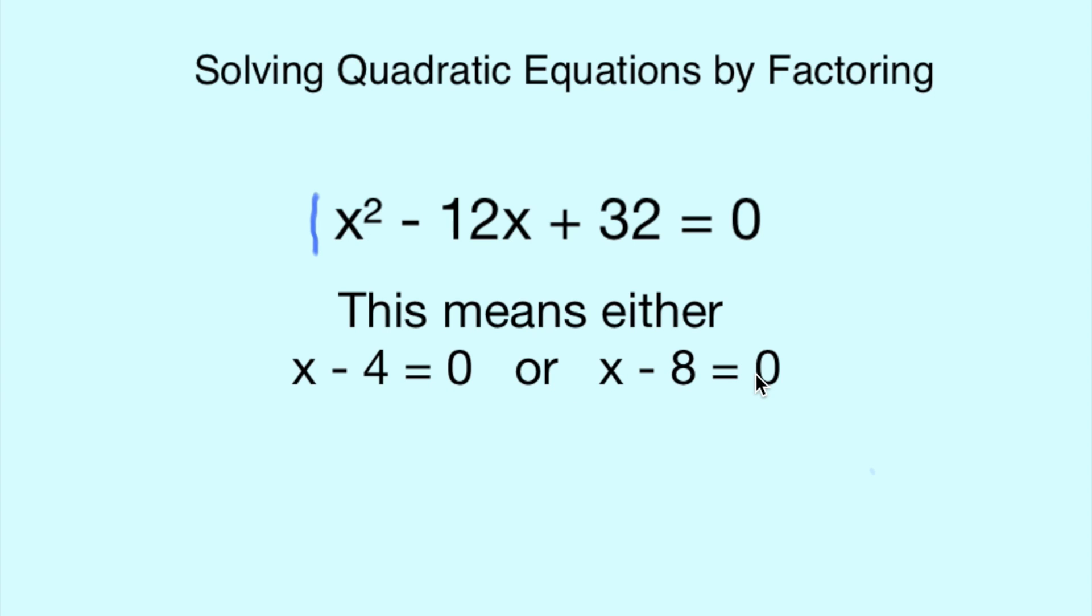To find that value of x, we need to cancel out. We put a +4 below the -4 and a +4 below the 0. We cross out the 4s, which leaves us with x = 4.